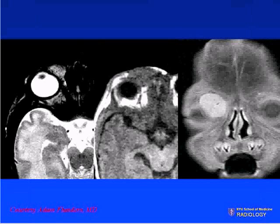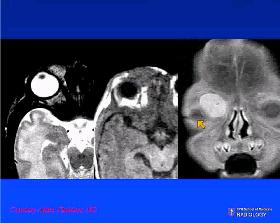This is a neonate who presented with a supramedial orbital lesion. On T2-weighted images, it's not too hyperintense when compared to CSF. On soft tissue window, it is isointense to brain parenchyma and avidly enhancing — this was a capillary hemangioma. They present in the perinatal period, typically around age one, and often involute within a year or two.